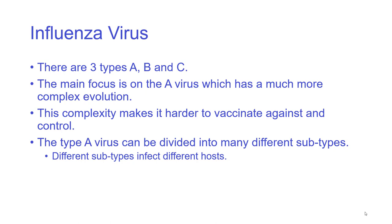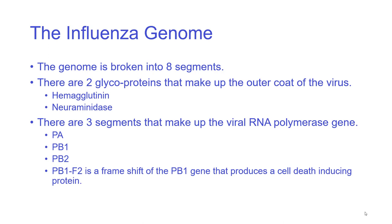Type A is divided into many different subtypes that infect different hosts and have different levels of pathogenicity. The genome is broken into eight segments. There are two glycoproteins which form the outer coat of the virus: hemagglutinin and neuraminidase, HA and NA.